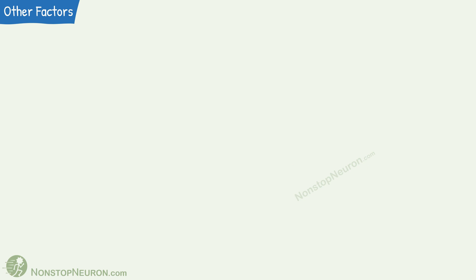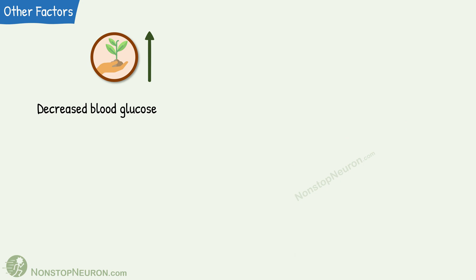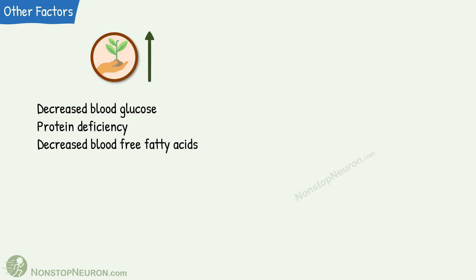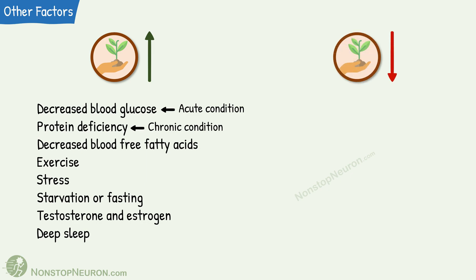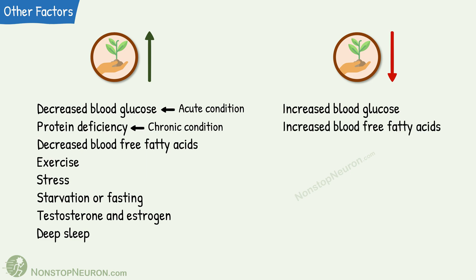Besides these hormones, certain other factors can also affect growth hormone secretion. Factors that stimulate growth hormone secretion include decreased blood glucose, protein deficiency, decreased blood free fatty acids, exercise, stress, starvation or fasting, testosterone and estrogen, and deep sleep. Hypoglycemia stimulates growth hormone secretion especially under acute conditions, while protein depletion is a potent stimulator during chronic conditions. Factors that decrease growth hormone secretion include increased blood glucose, increased blood free fatty acids, and obesity. Growth hormone secretion also decreases with aging, whereas its secretion is at peak during puberty.